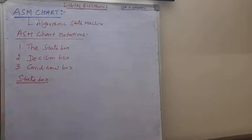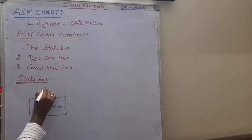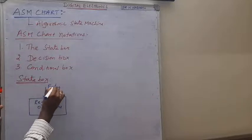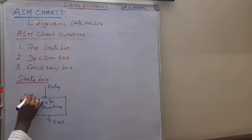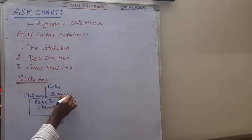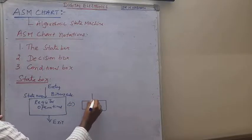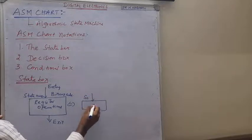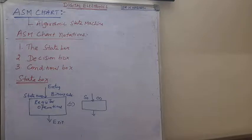Now let us see what the state box is. The state box describes the state and register operations. It has one entry path and one exit path. We also discuss the state name and binary code. For example, the state name is S0 and the binary code assigned is 00.